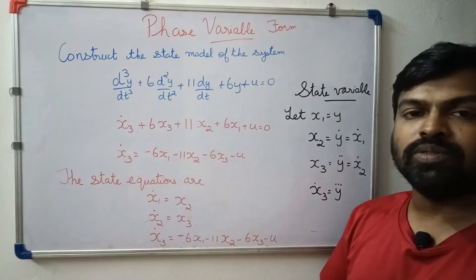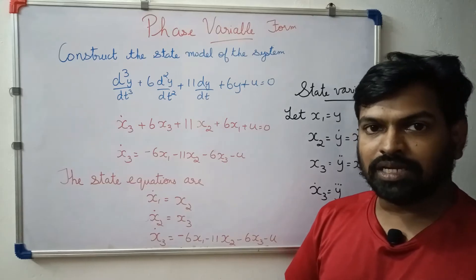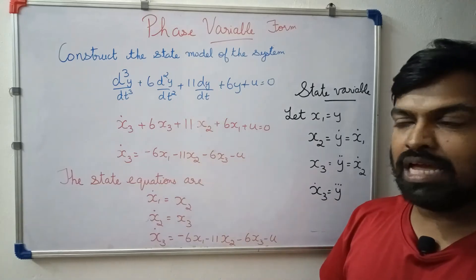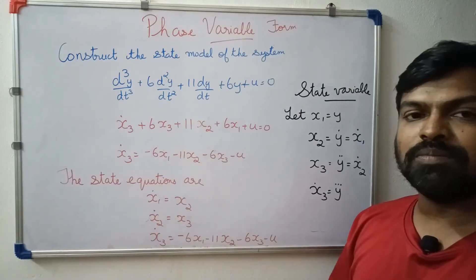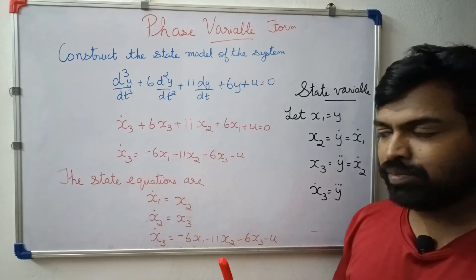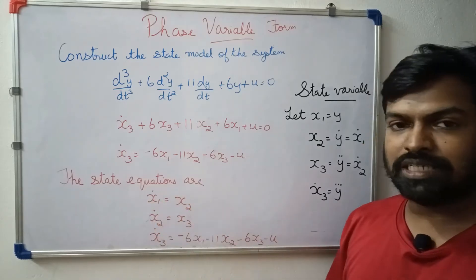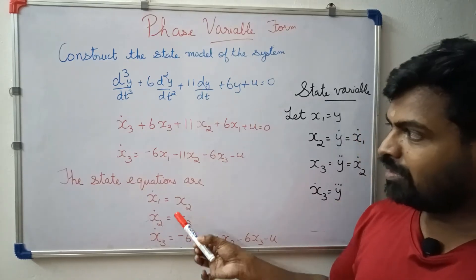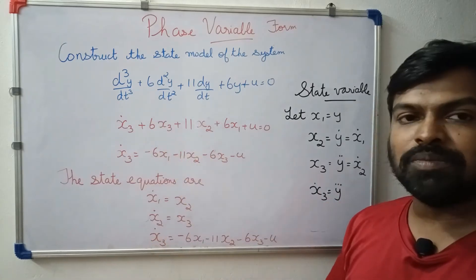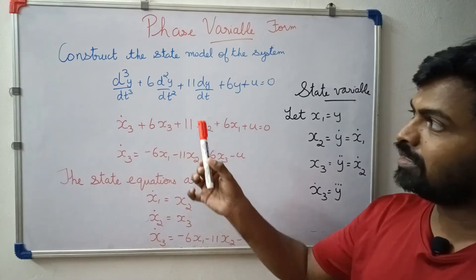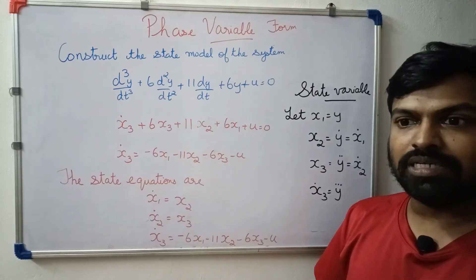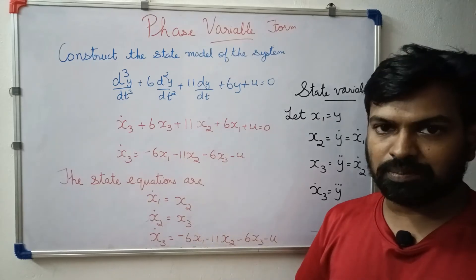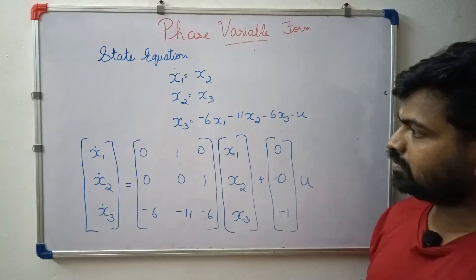So we have 3 state equations. We have x1 dot, x2 dot, and x3 dot. We substitute using the phase variable formula and we have 3 state equations.